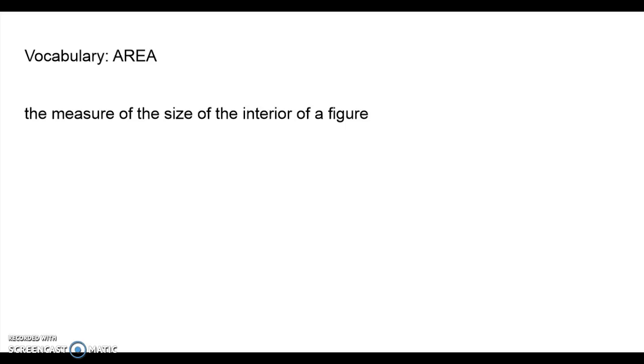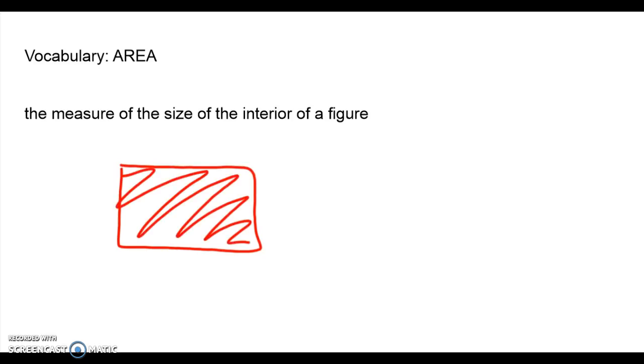So first, let's write down all of this vocabulary, maybe on your conjecture sheet or on another sheet of paper. The first vocab term is going to be area, and that's the measure of the size of the interior of the figure, so everything that makes up the inside of a two-dimensional shape. If we're talking rectangles, it's everything on the inside of the figure. Make sure you pause the video if I'm going too fast through the vocabulary.